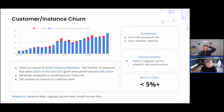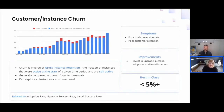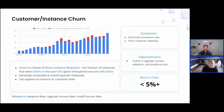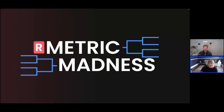Our final metric is customer instance churn. Folks often talk about gross instance retention — the percentage of instances that were active at the start of a given period and are still active. Customer instance churn is the opposite: the percentage of instances that are no longer active. We like to see churn be at less than 5%, though this depends on the length of time you're measuring.